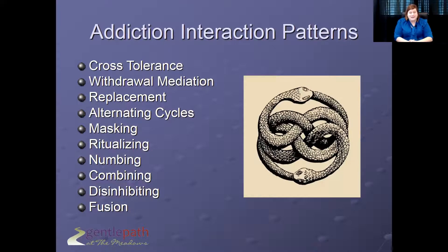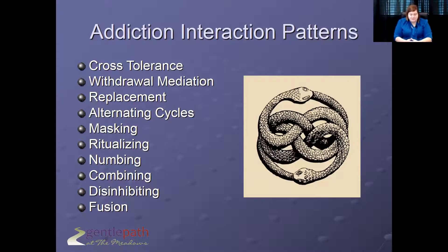We're going to look at the specific interaction patterns. Cross tolerance means early exposure to one addictive process or substance sets you up to more quickly pick up another to an addictive level. Imagine early exposure to games or pornography might set up a pattern of click numbing. So if someone is trying to be sober from pornography or video games but finds themselves just aimlessly searching the web, that's something to keep an eye on.